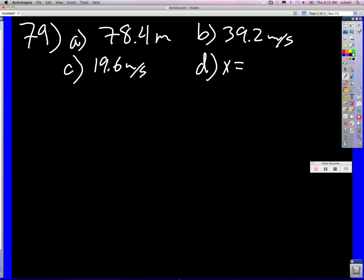The question is, what is the position when the velocity is 19.6 meters per second? The initial velocity is zero, and then the acceleration is 9.8 meters per second squared.